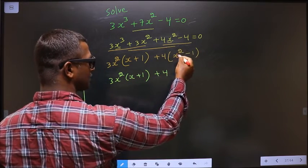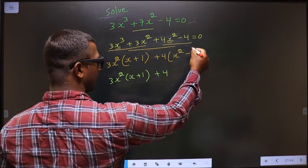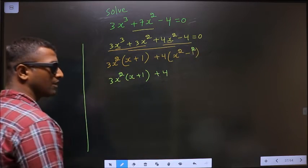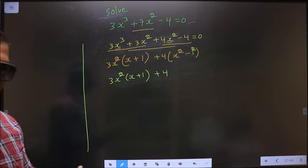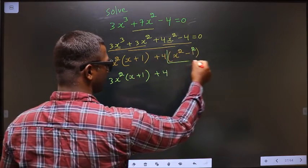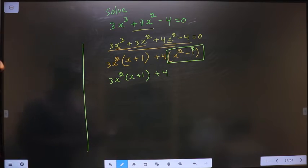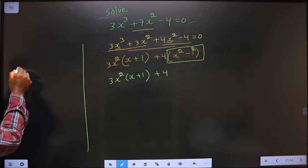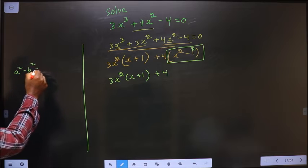Here you have square on x. On 1, I can put a square. It's not going to make any change. Why did I put a square on 1? Because onto this one, I will apply the formula a² - b².